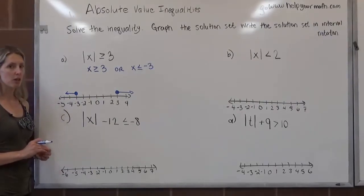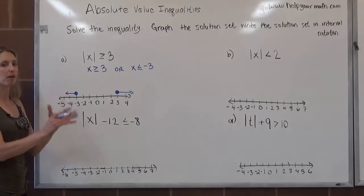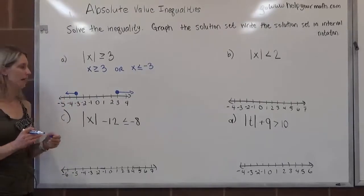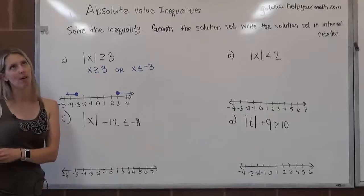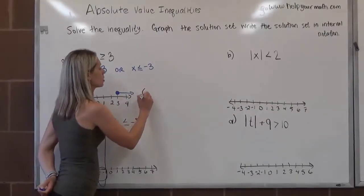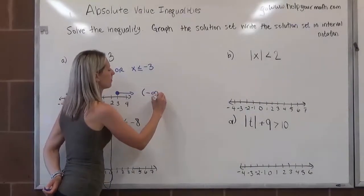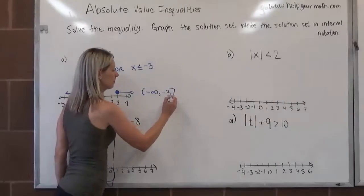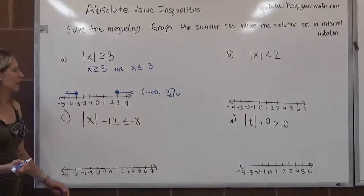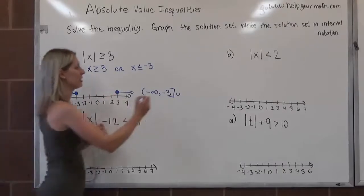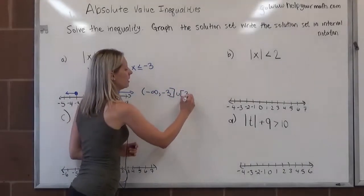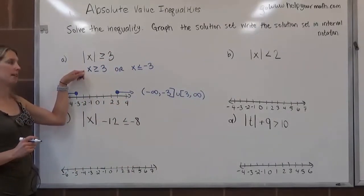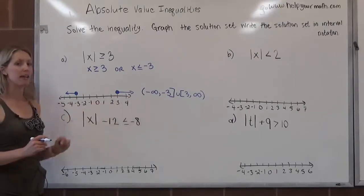In interval notation, we keep it parallel to the graph. Starting with the left interval — all numbers less than negative 3 — there's no least number smaller than negative 3, so that starts at negative infinity up to negative 3, with a bracket since negative 3 is included. Then we use 'or,' and the solutions start back at 3, also included, going to infinity. So here are the three representations: algebraic, graphical, and interval notation.